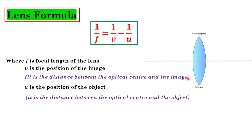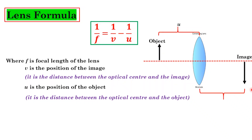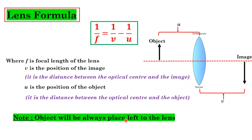In the diagram we have a convex lens with its principal axis. This applies to all lenses, whether convex or concave. The object is placed to the left of the lens and the image is formed accordingly. For simplicity, we always place the object towards the left side, though there is no restriction. This strategy helps in solving numericals.